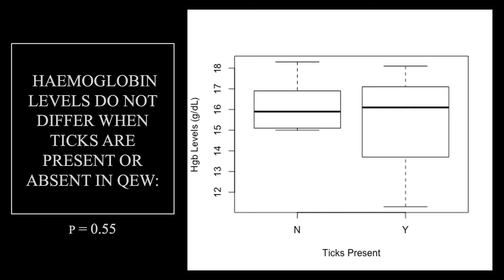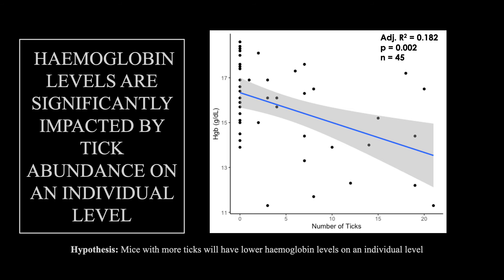Looking specifically at Queen Elizabeth's Wildlands, there is a large difference between hemoglobin levels when mice are infested versus when mice are not, but this difference was not statistically significant, again due to high variance. Analyzing data from all the sites combined, I found using a general linear model that when the number of ticks increases on deer mice, hemoglobin levels decrease significantly.